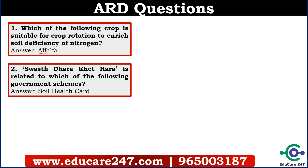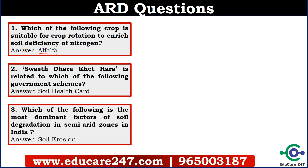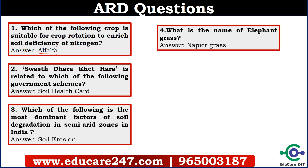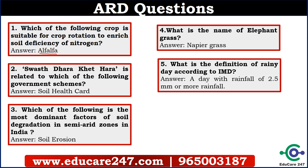This was not a well-known slogan, but it was asked in the Navard examination — it is a tough question. The third question is: which of the following is the most dominant factor of soil degradation in semi-arid zones in India? The answer is soil erosion. The fourth question is: what is the name of elephant grass? The answer is Napier grass.